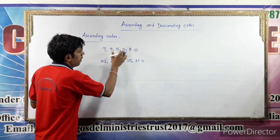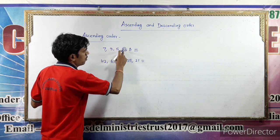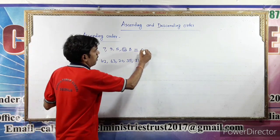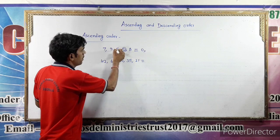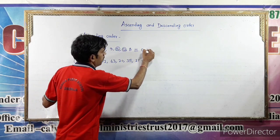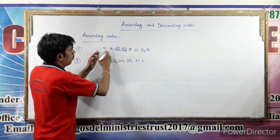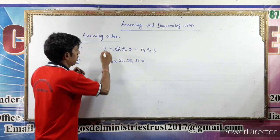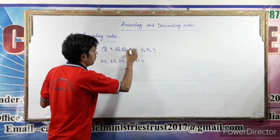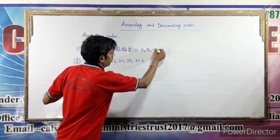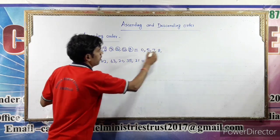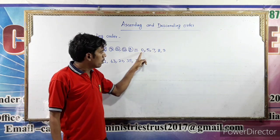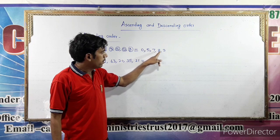In these numbers, the smallest number is 0. So we write 0 first. From the remaining numbers, the next smallest is 5. Now from 8, 9, and 7, the smallest is 7. And last, the greatest number is 9. So ascending order: 0, 5, 7, 8 and 9.